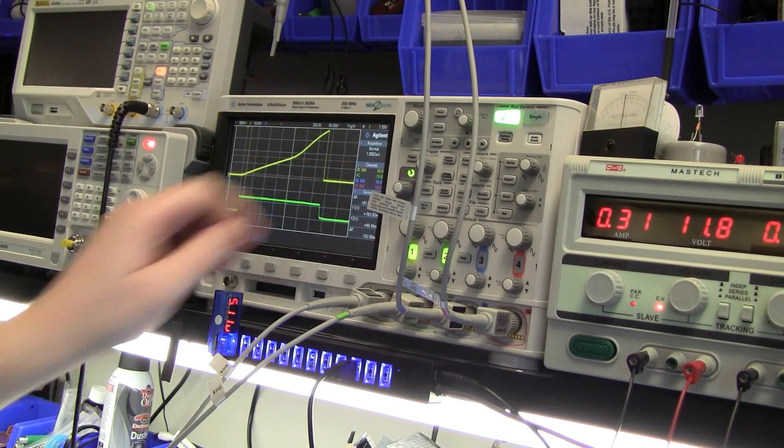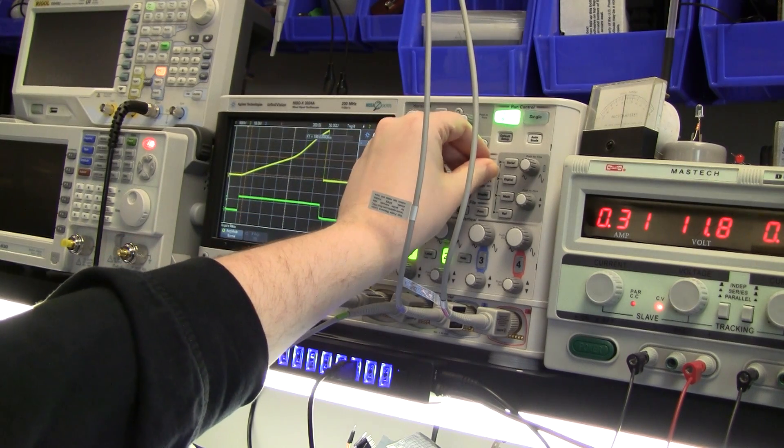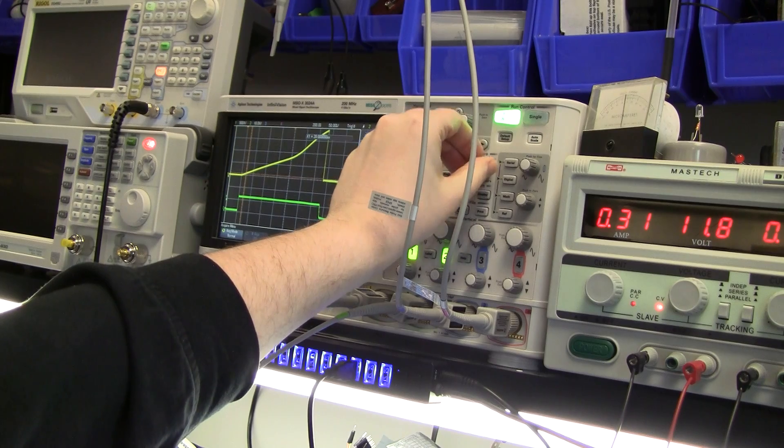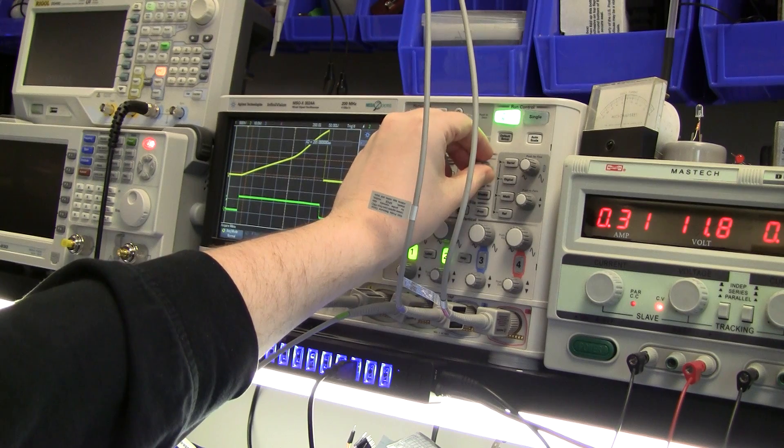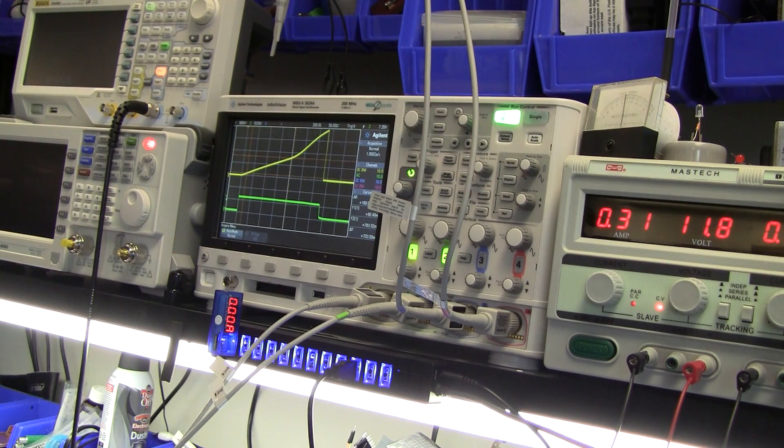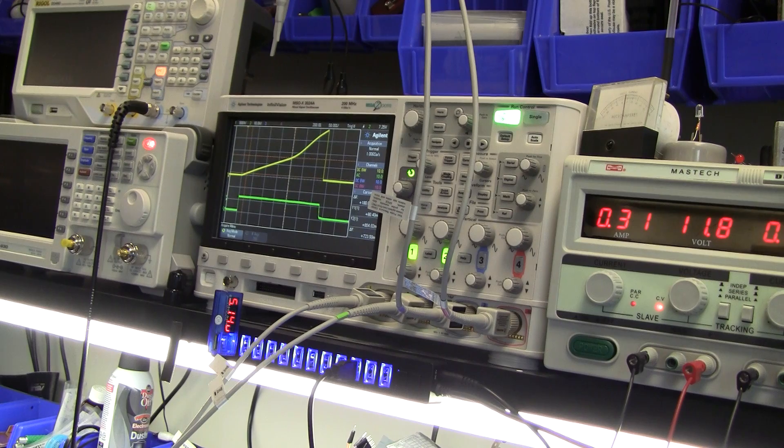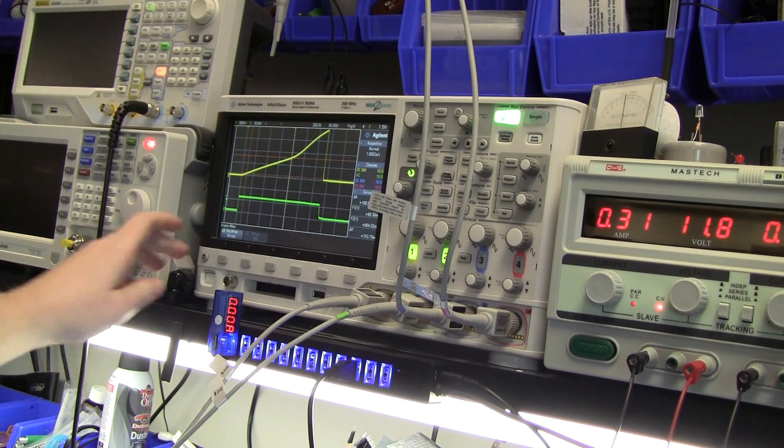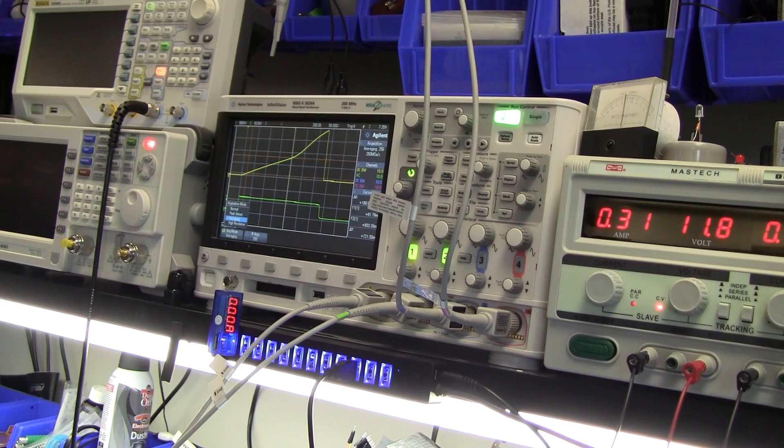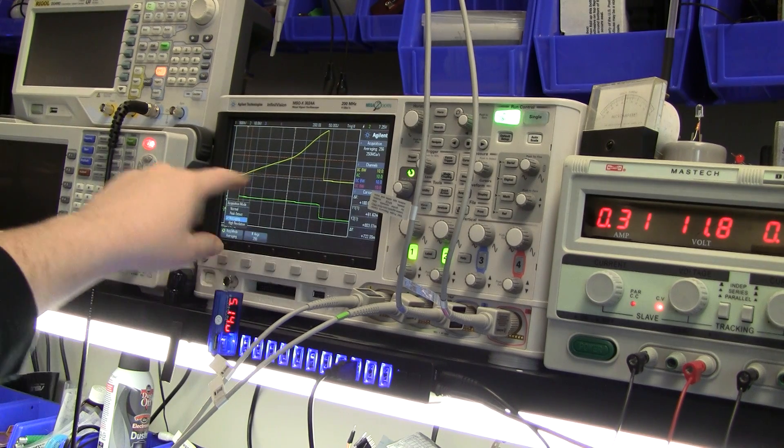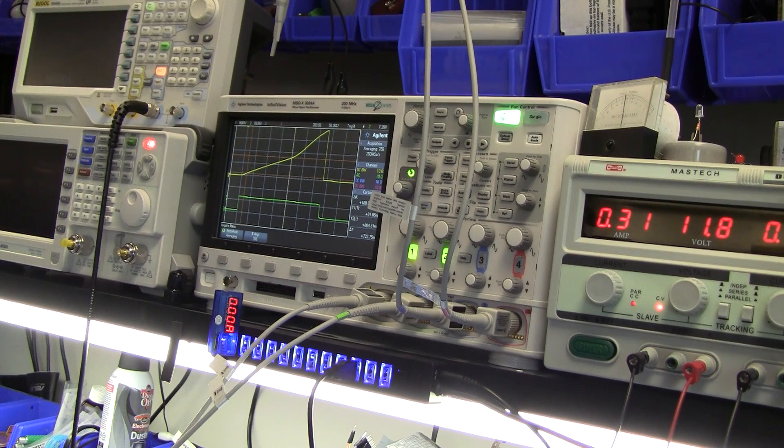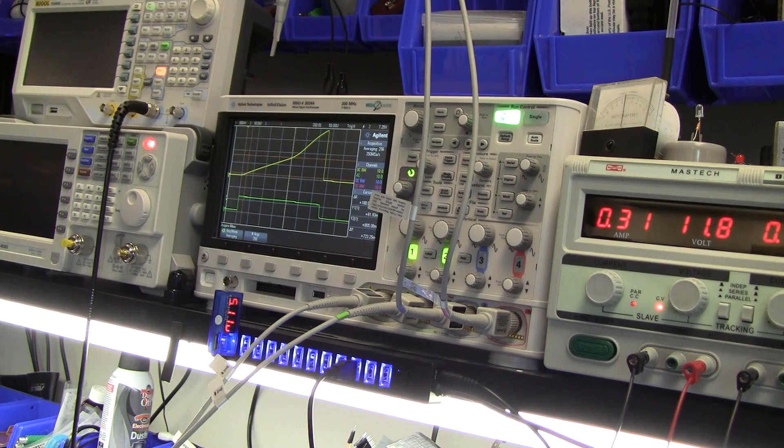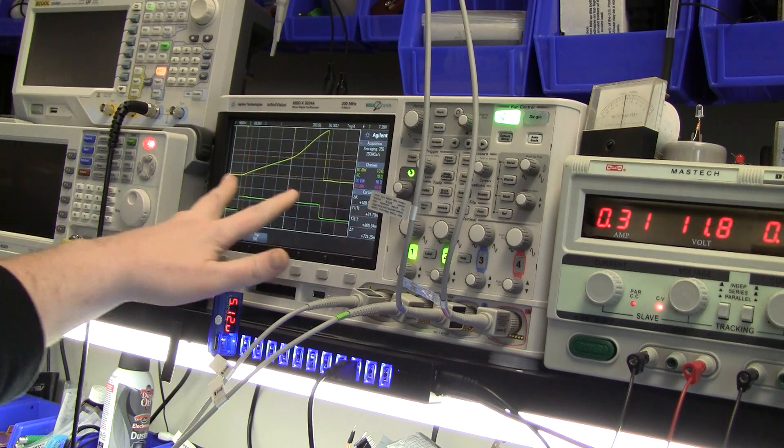So let's put some cursors on here. Let's go down right about here with x1 and x2 up here on the linear region. Delta y is 700, and actually let's turn some averaging on to make it a little bit more accurate. We've got 722 millivolts which is 7.23 amps obviously.